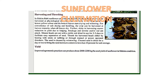Thresh the harvested heads either by beating with sticks, rubbing, or through manual or power-operated threshers. The seed is cleaned by winnowing, then dried for a day or two to bring seed moisture content to less than 10 percent for safe storage. Improved agronomic practices can produce about 2000 to 2200 kg per hectare seed yield of sunflower.